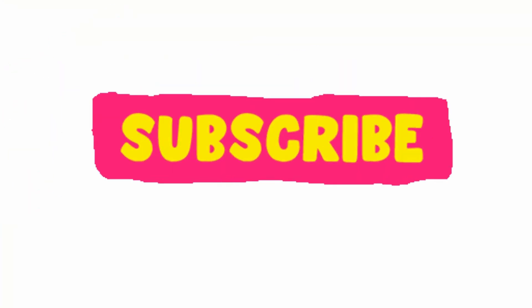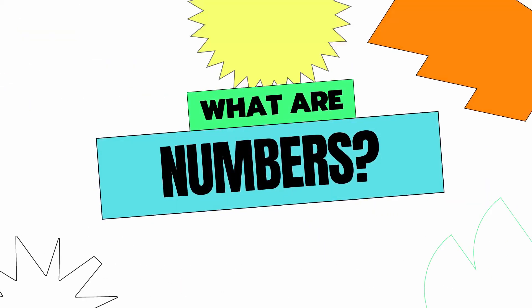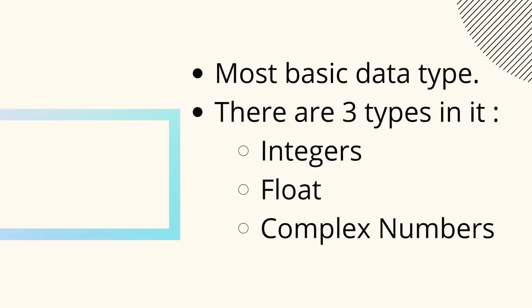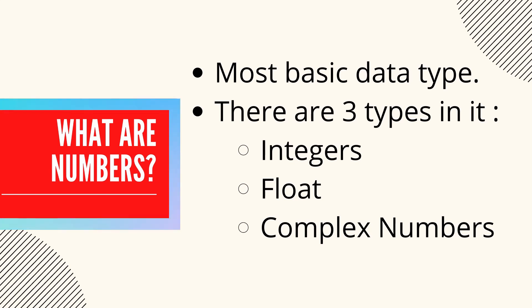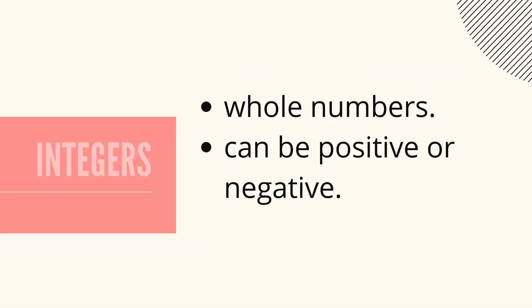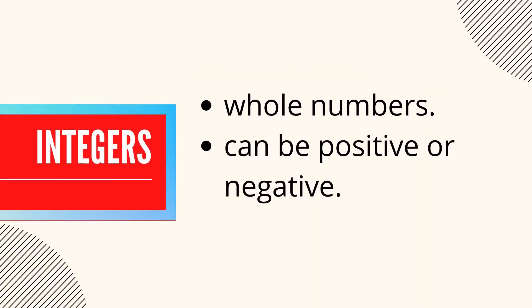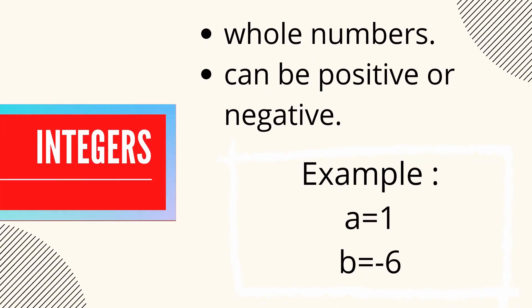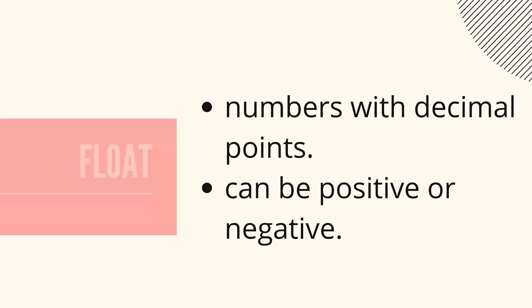Without any further delay, let us get started. First on the list: what are numbers in Python? Numbers are the most basic yet one of the most important data types in Python. This data type is used to represent numeric values. There are three ways of storing numbers in Python. First are integers — these are whole numbers and can be positive or negative. Examples: a equals 1 and b equals minus 6.